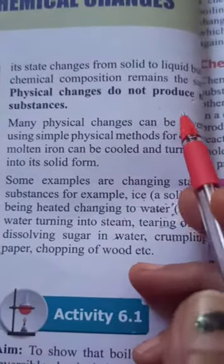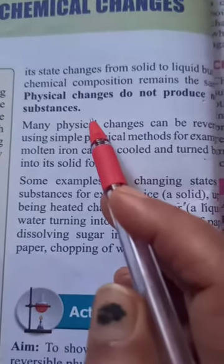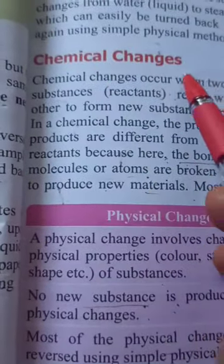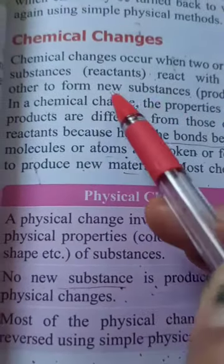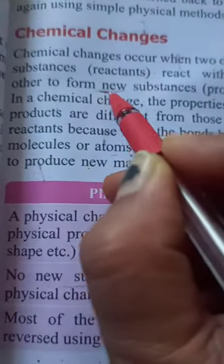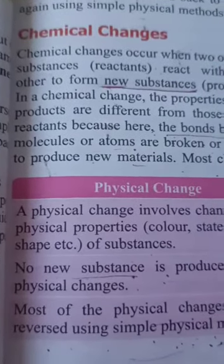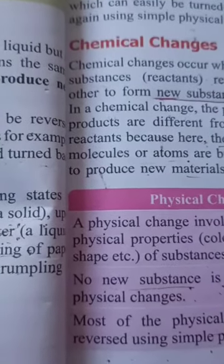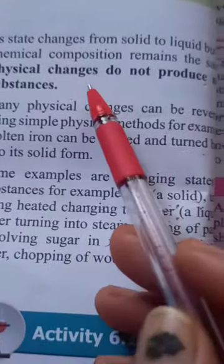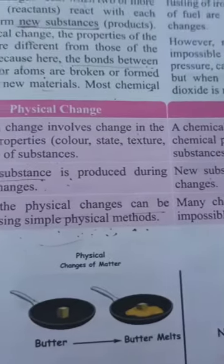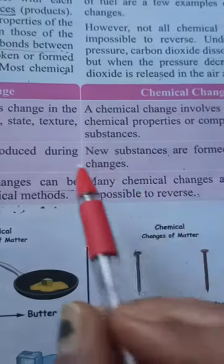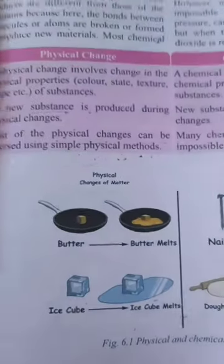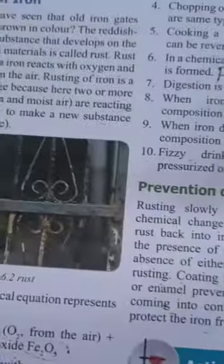Physical changes do not produce new substances, and chemical changes always produce a new substance. On the basis of this characteristic feature we can understand whether changes are chemical or physical. We have studied the differences between physical and chemical changes, explained through examples with diagrams.